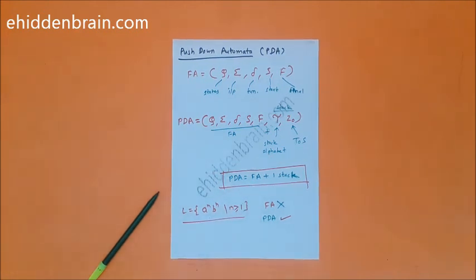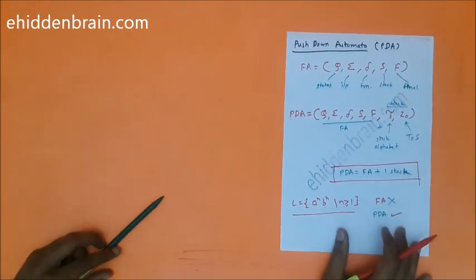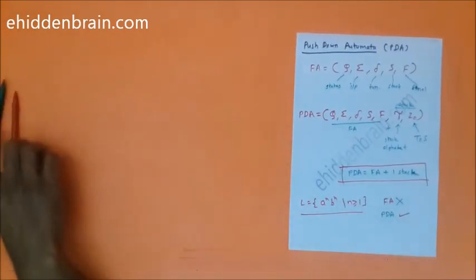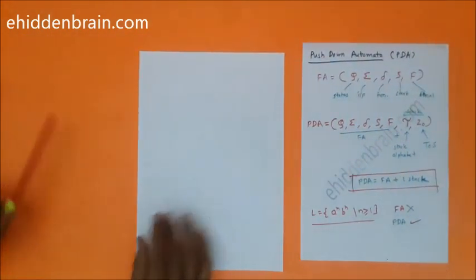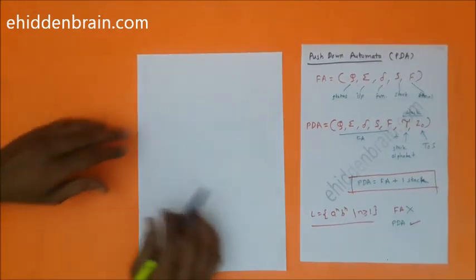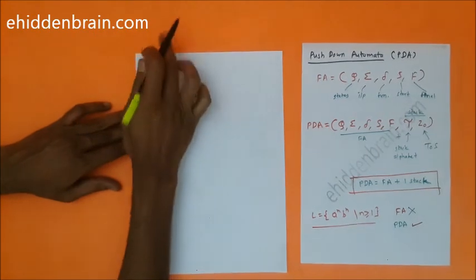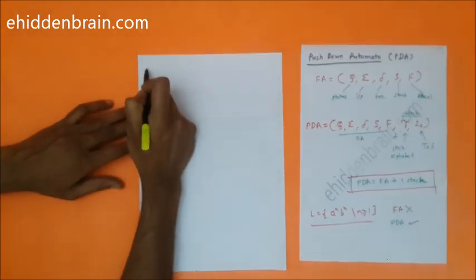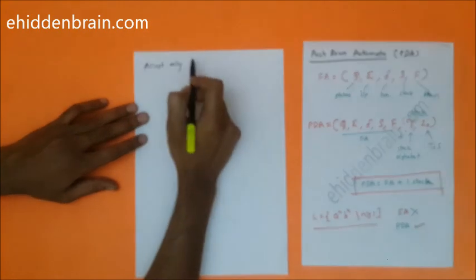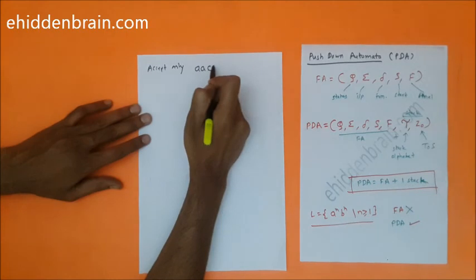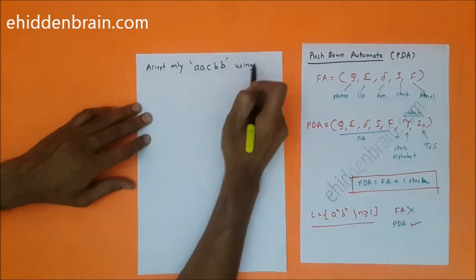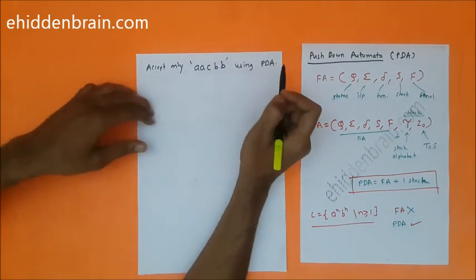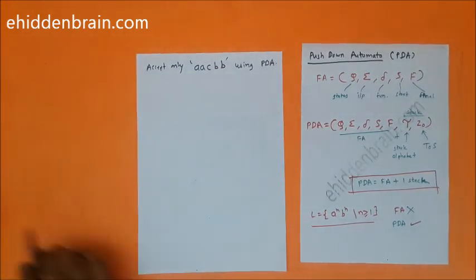PDA has the capabilities of finite automata plus it has one stack, which is really helpful to solve such problems. Now let's see an example with the conventions required for pushdown automata. The example is: accept only the string 'aacbb' using pushdown automata.